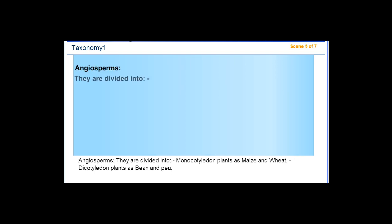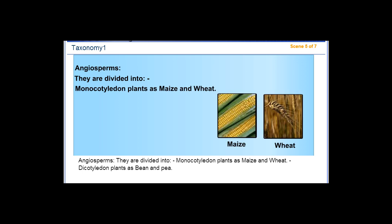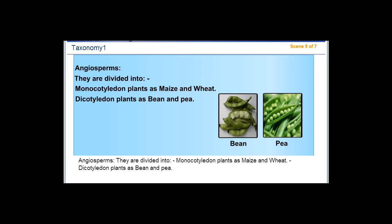Angiosperms are divided into monocotyledon plants, such as maize and wheat, and dicotyledon plants, such as bean and pea.